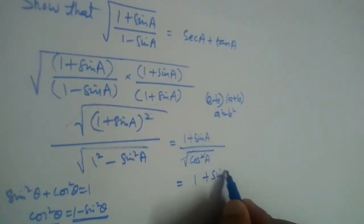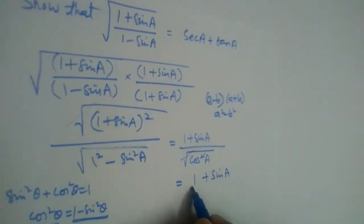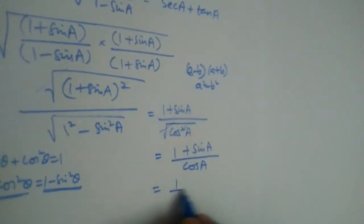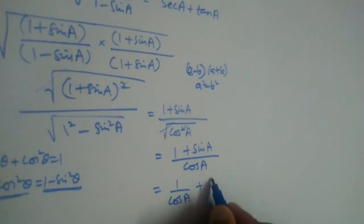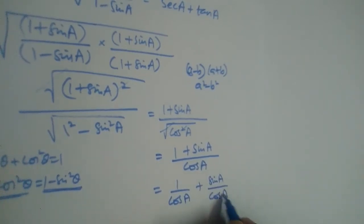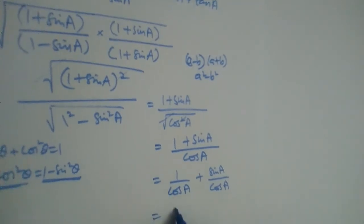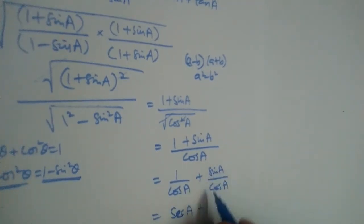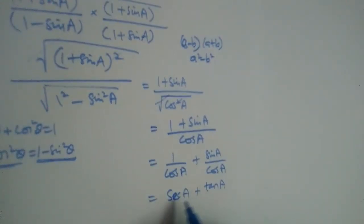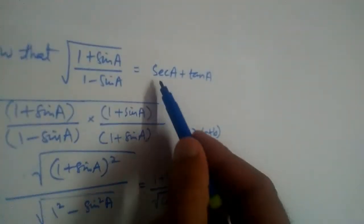We are left with (1 + sinA) divided by cosA. Writing this separately: 1/cosA + sinA/cosA. Now 1/cosA equals secant, and sinA/cosA equals tan. So we get secant plus tan, which is what we needed to prove.